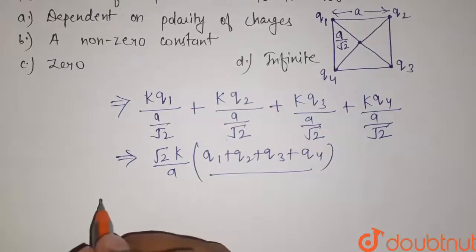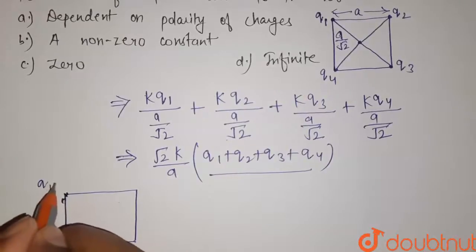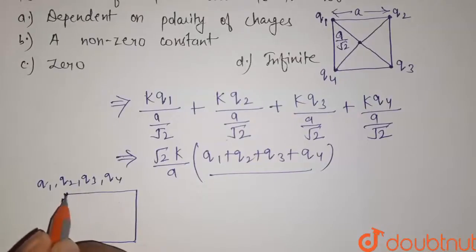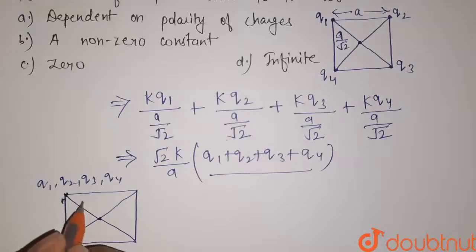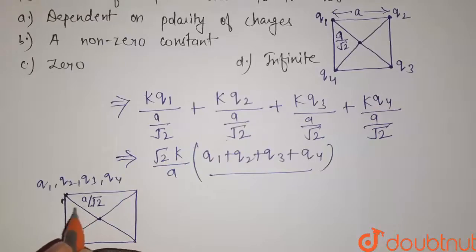Now if we place all the charges on same vertices. So suppose here we have put all the four charges q1, q2, q3 and q4. And this is the center of this square. The distance is also same as that of previous that is a by root 2.